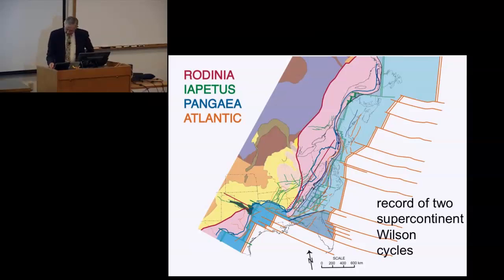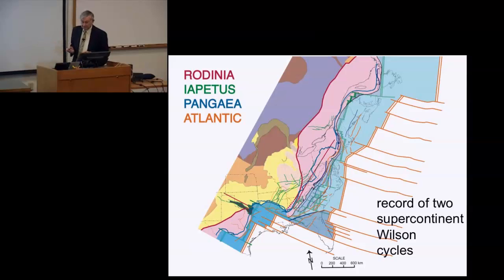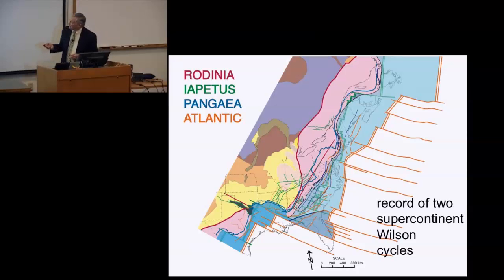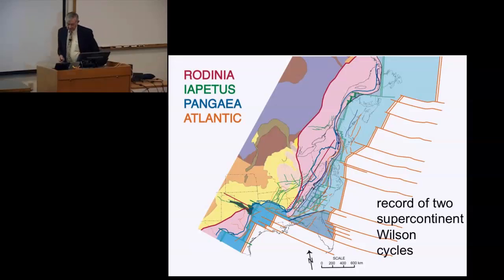A supercontinent cycle involves the assembly of all, or nearly all, of the continental crust on earth into a single large continent. The earliest we'll discuss is Rodinia. Rodinia broke apart and an ocean opened — the Iapetus Ocean — roughly in the position of the present Atlantic. But Iapetus closed, the continents came together to form Pangaea. Then Pangaea broke apart and the Atlantic Ocean is still opening. That's the cycle we're looking at.